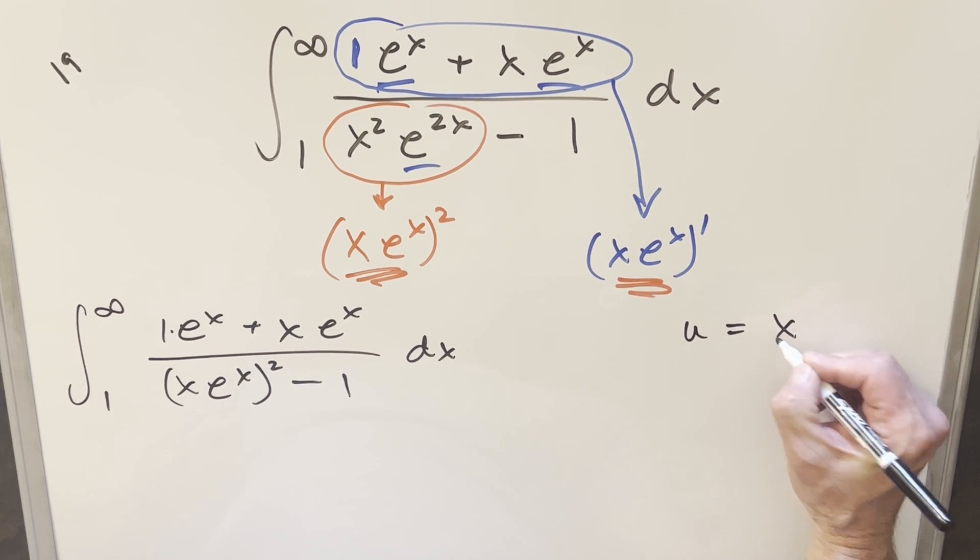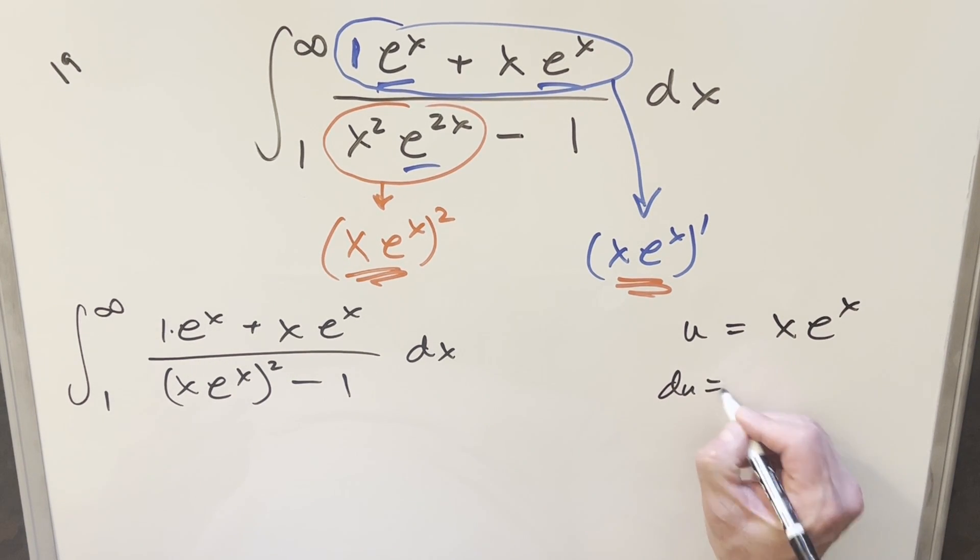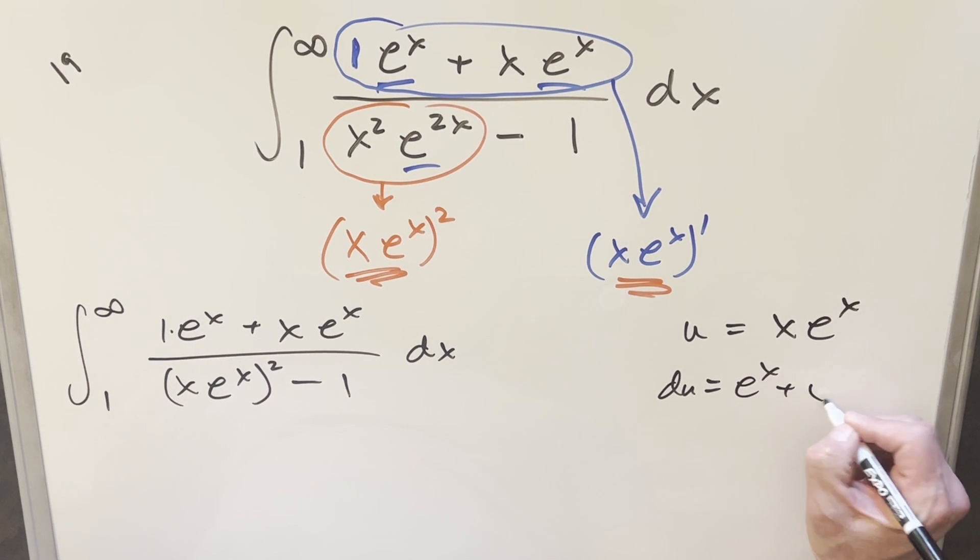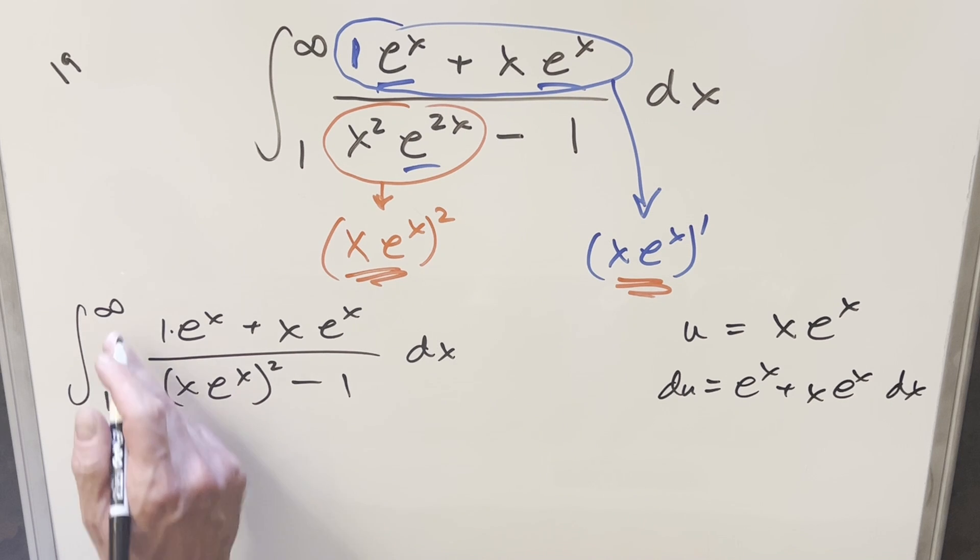So I'm just going to make my u equal to xe^x. I'll take a derivative. Derivative of this is going to be exactly our numerator here. So this is going to be e^x + xe^x dx. So we go ahead and substitute. First, when we evaluate infinity, you plug infinity in there, this is still going to be infinity. And then for one, you plug one in, the lower bound is just going to become e. The whole numerator is going to be our du, so we'll just write that down. And this whole thing is going to just transform to u² - 1.